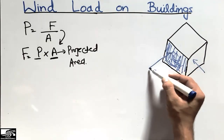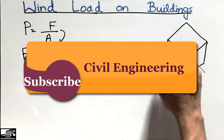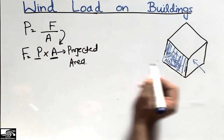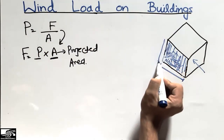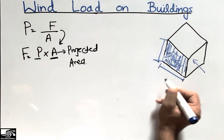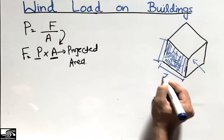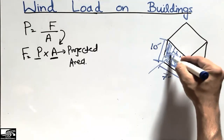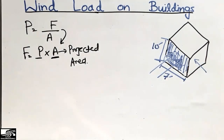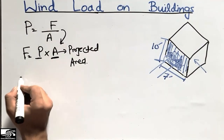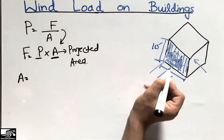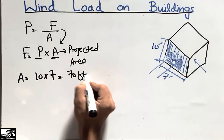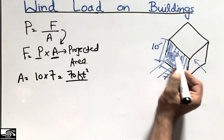We are interested in the load acting in one direction on this building. The projected area is determined by the length and height of the building. In our example, the length of the building is 7 feet and the height is 10 feet, so the projected area is 10 × 7 = 70 square feet.